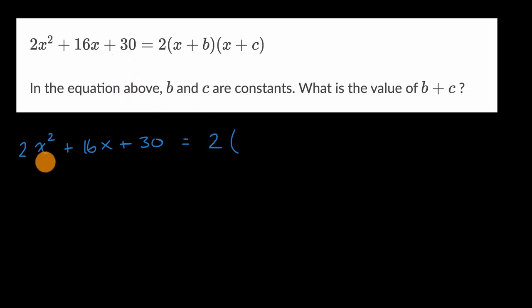But if we factor out a 2 out of this first term, you're just left with an x². You factor out a 2 out of 16x, you get 8x. And you factor a 2 out of 30 and you get plus 15.